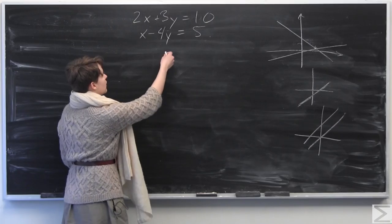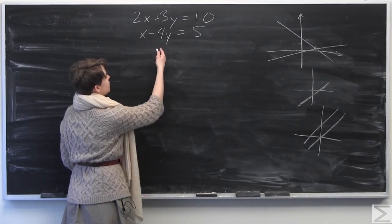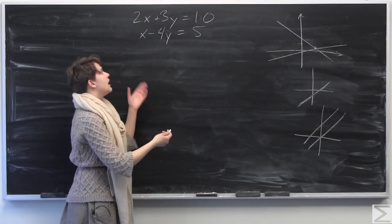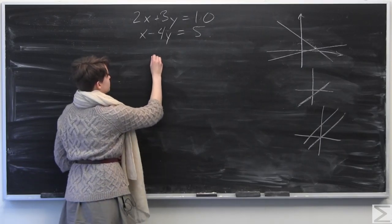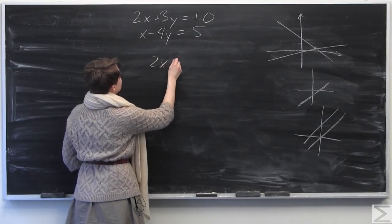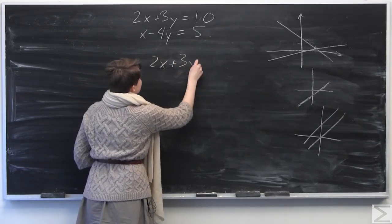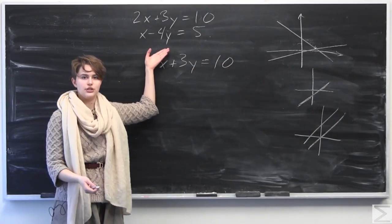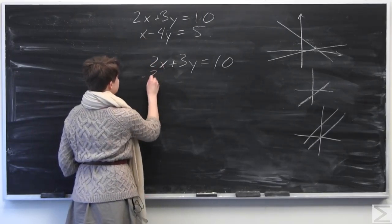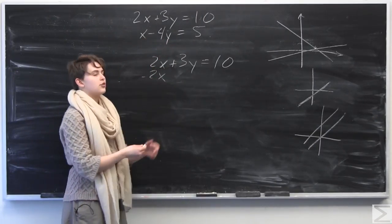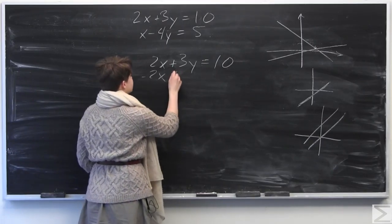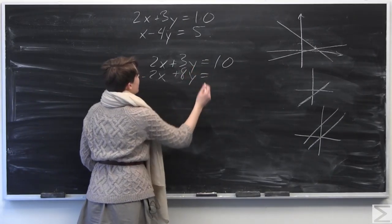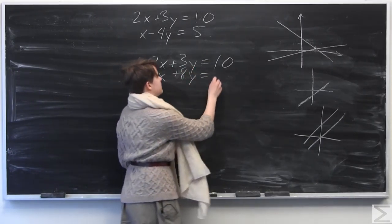In this case, x. So we're going to go ahead and multiply the second equation by negative 2. And then I'm going to add it to the first. So first of all, just recopy the first equation. 2x plus 3y is equal to 10. And I'm going to multiply the entire second equation here by negative 2. x times negative 2 is negative 2x. Negative 4y times negative 2 is going to be positive 8y. And then 5 times negative 2 is going to be negative 10.